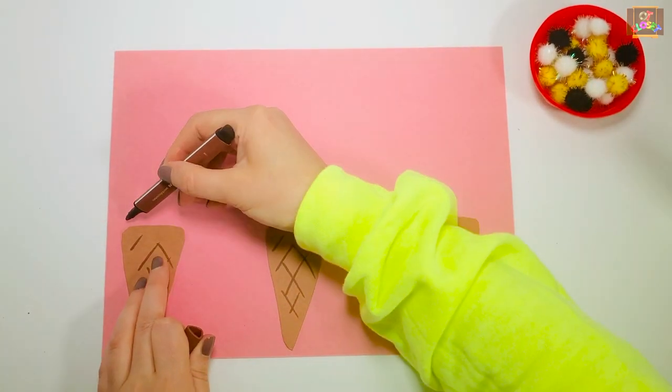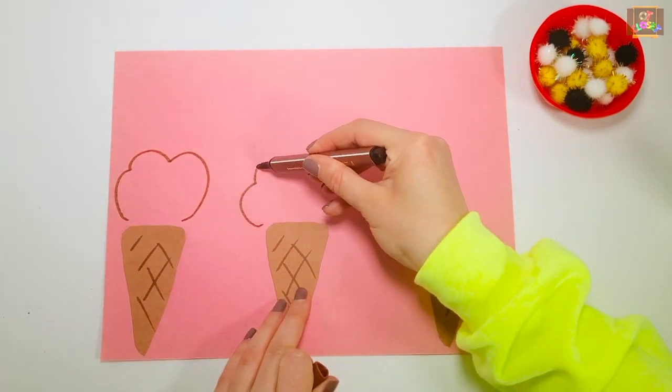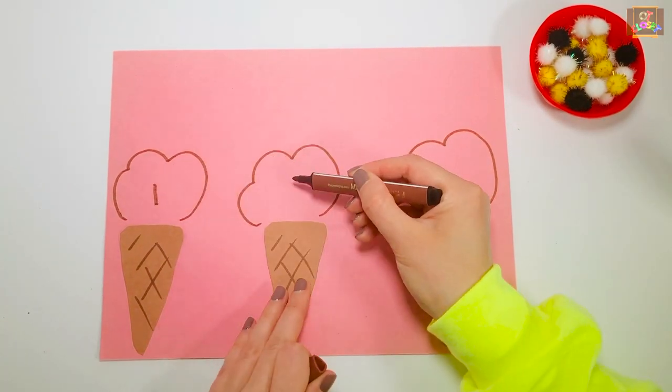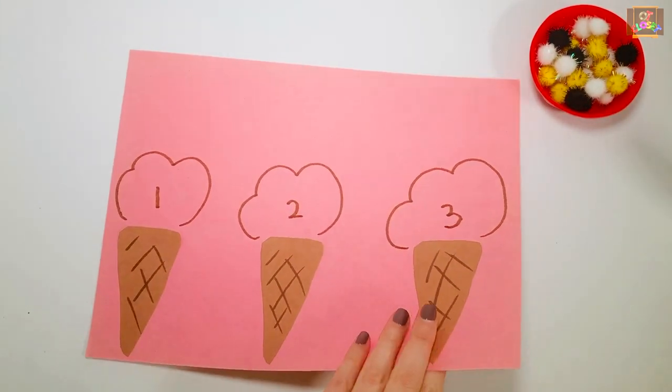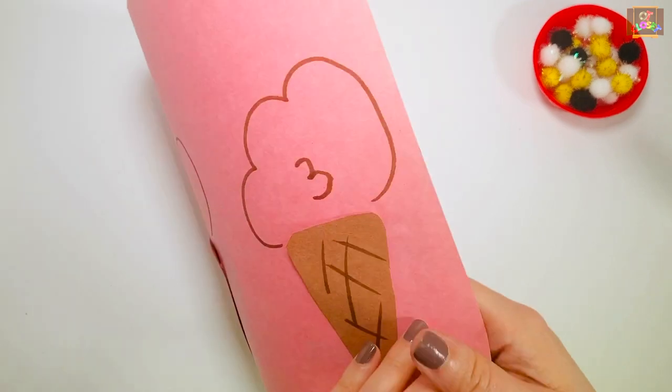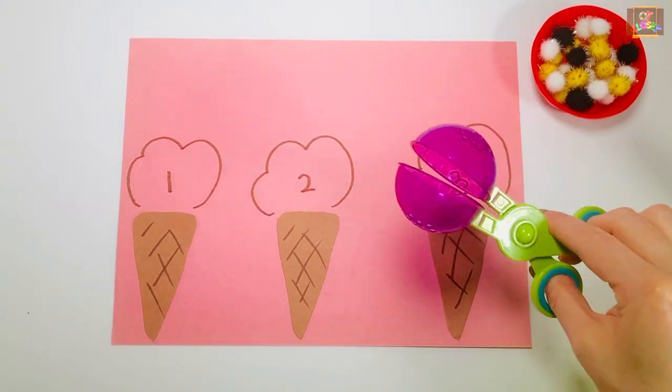Numbers on the ice cream should correspond to your child's skill level. Use the pincer grasp or use a scooper.